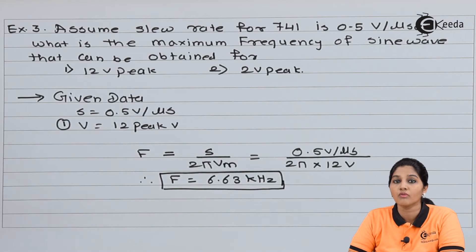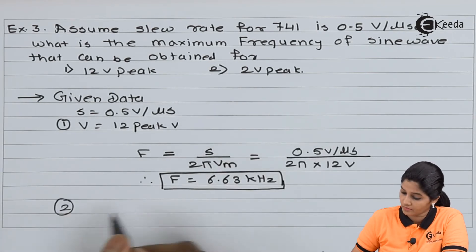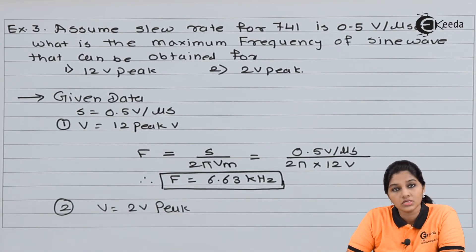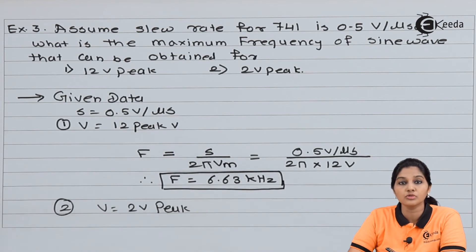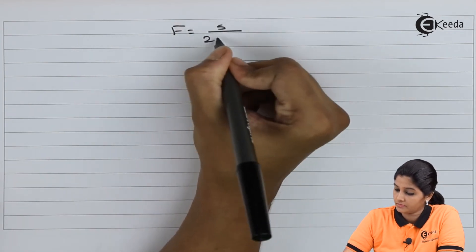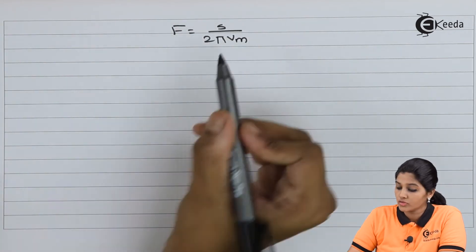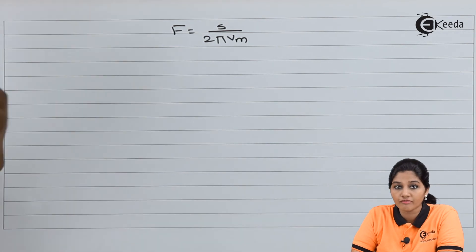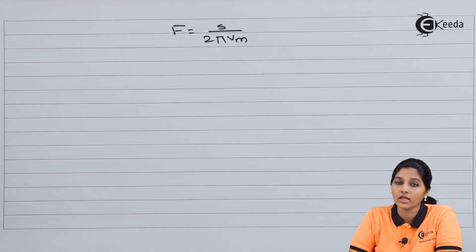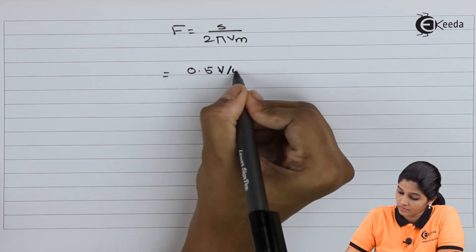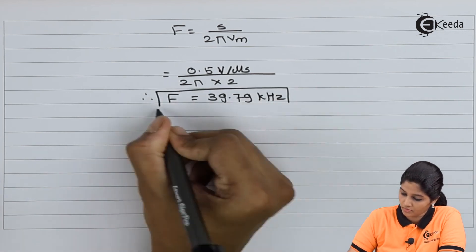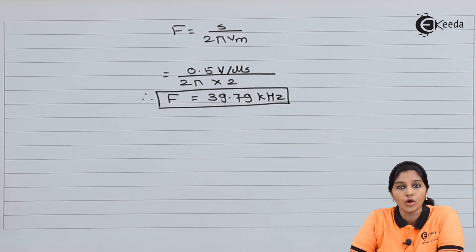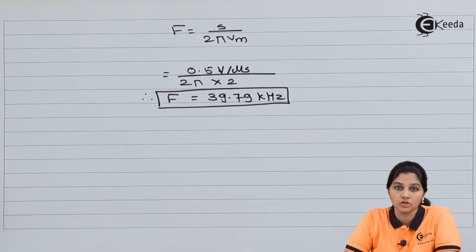Now let's consider voltage equals to 2 volt peak. We use the same formula F equals S upon 2π into Vm, but here the value of Vm is equals to 2 volt. S is equals to 0.5 volt per microsecond and Vm is equals to 2 volt. So for voltage equals to 2 volt we obtain frequency as 39.79 kilohertz.